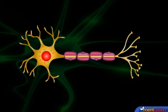Take a look at this figure. It represents the structure of a neuron. What is a neuron? A neuron is the structural and functional unit of the nervous system.